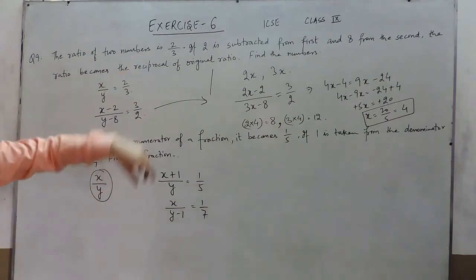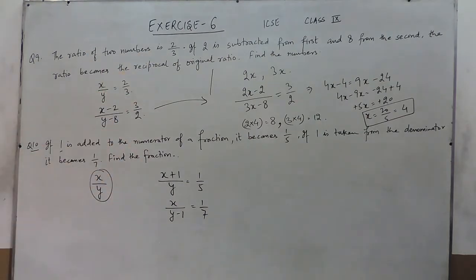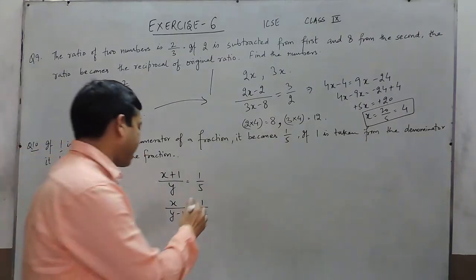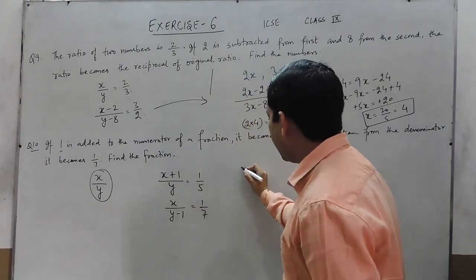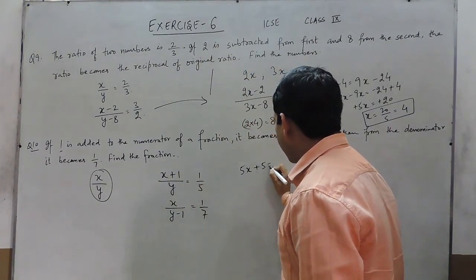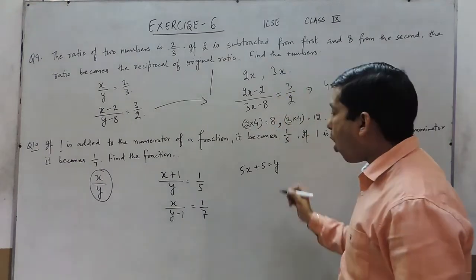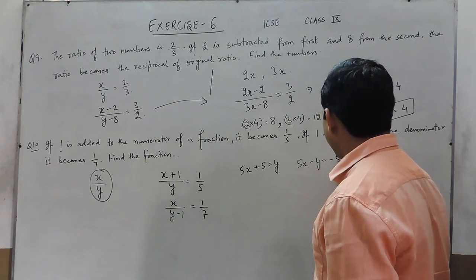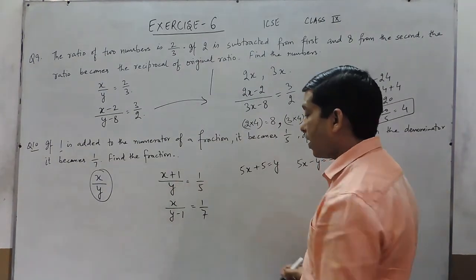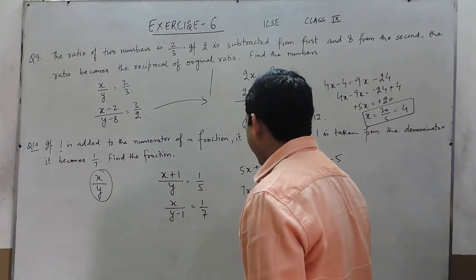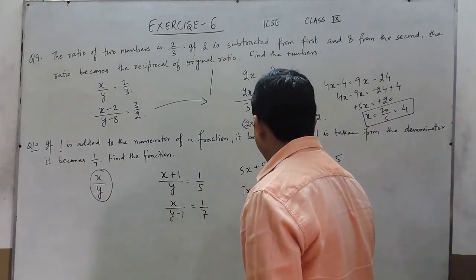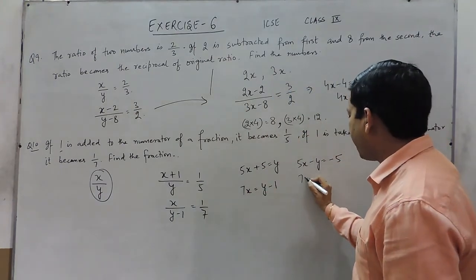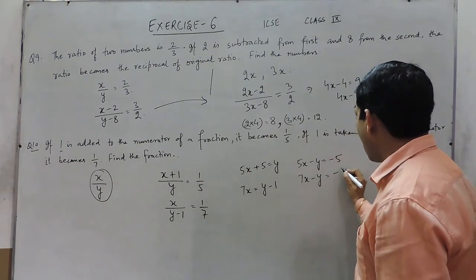Since exercise 6 is on linear equations with 2 variables, it is always better to take 2 variables and solve. Looking at the first equation, this gives us 5x plus 5 equals y, or 5x minus y equals minus 5. This is the first equation. For the second equation, if we cross multiply 7x equals y minus 1, and taking y to the left hand side it becomes 7x minus y equals minus 1.